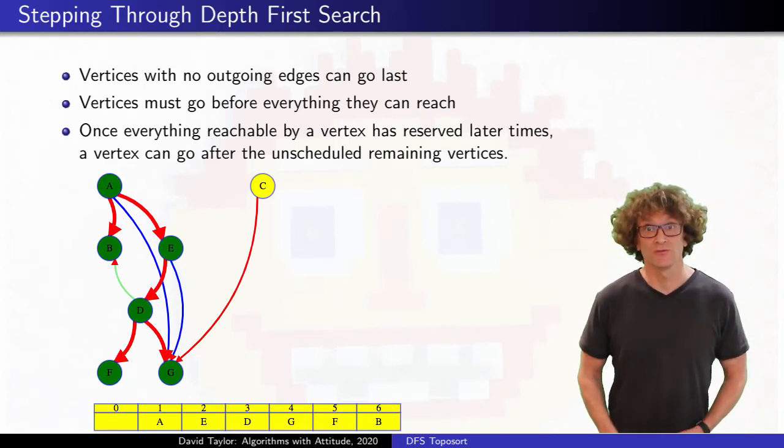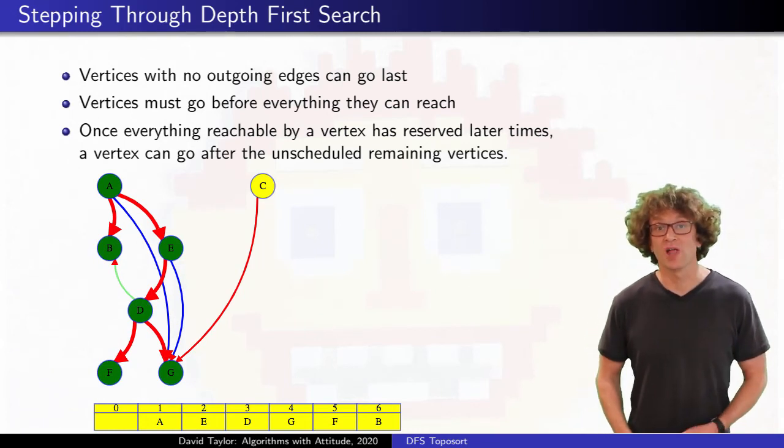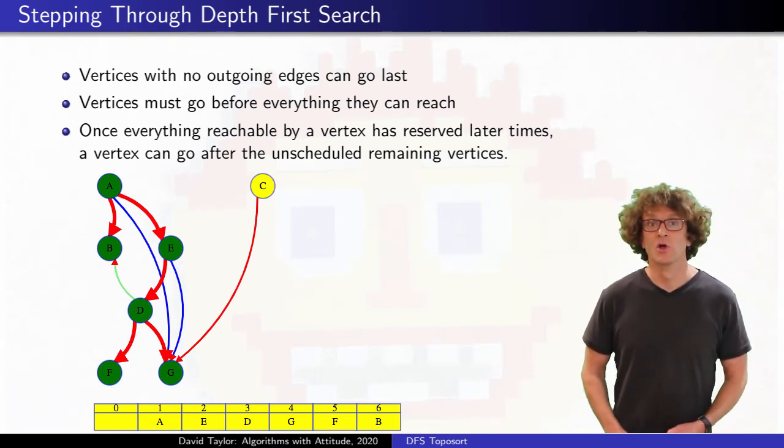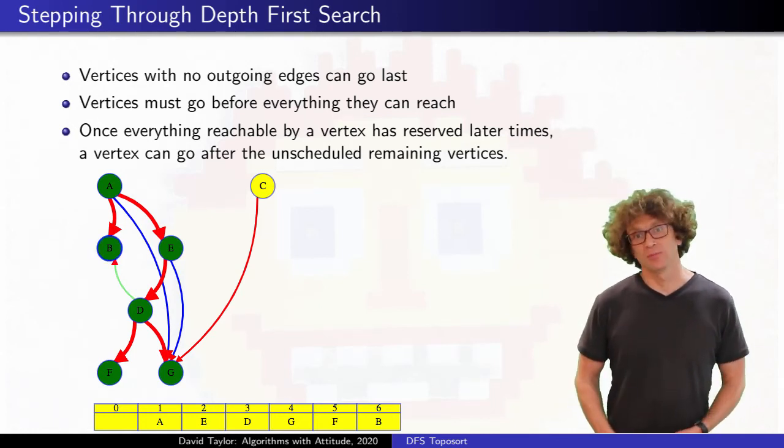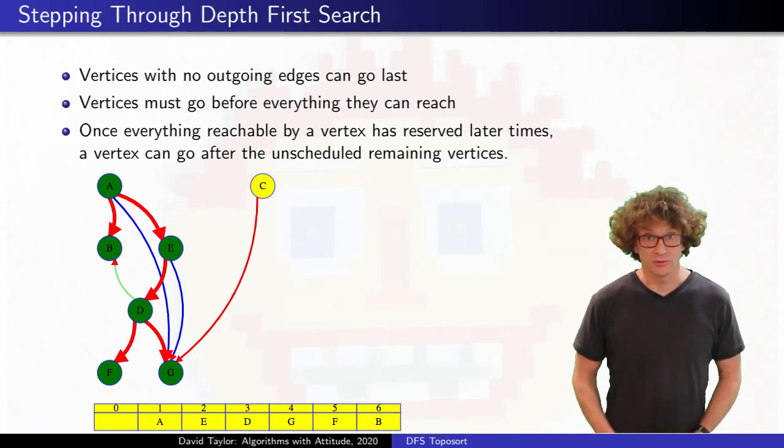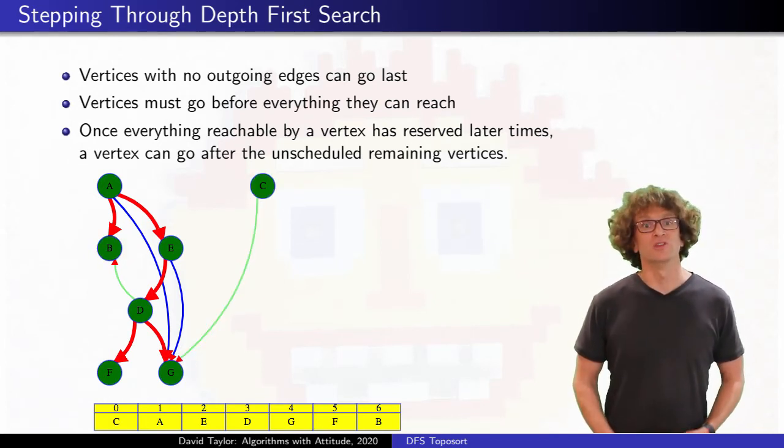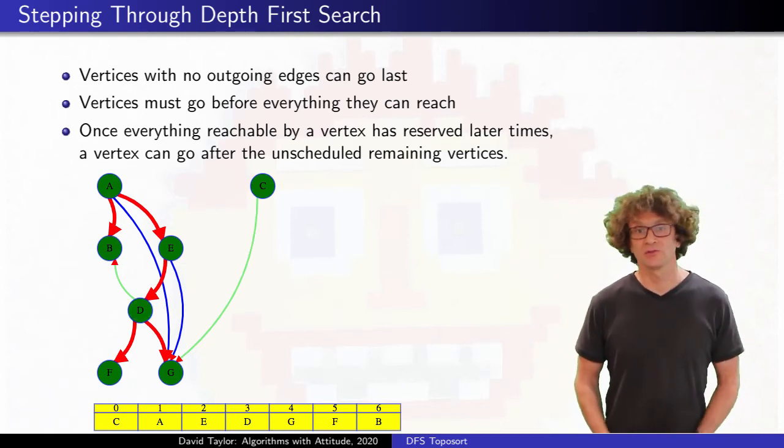Whenever we finish a vertex, we put it in the latest remaining unreserved slot in our topological order. We continue the search on the entire graph, not just a top level call on A. The top level search ignores B, because it is already searched, but C isn't. But when C finishes, it will add C to the front of the order. Everything else is already explored, so all other top level searches will just move on.